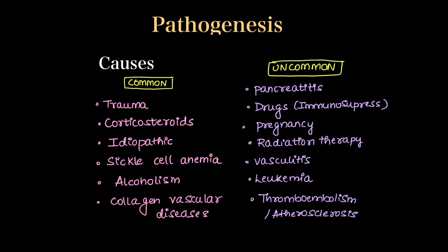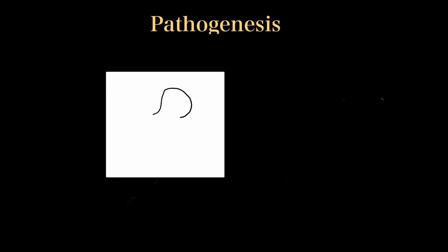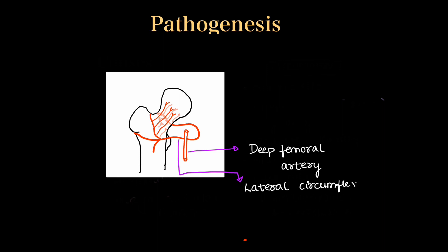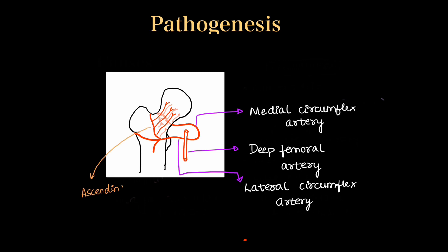Before moving into the pathogenesis, we need to understand the normal blood supply of the head of the femur. This is the diagram of the femur with greater trochanter, lesser trochanter, and the supplying arteries. The deep femoral artery is the major supply of the femoral head. From it arise the lateral circumflex artery and the medial circumflex artery, which surround the neck of the femur and give ascending branches to the head.